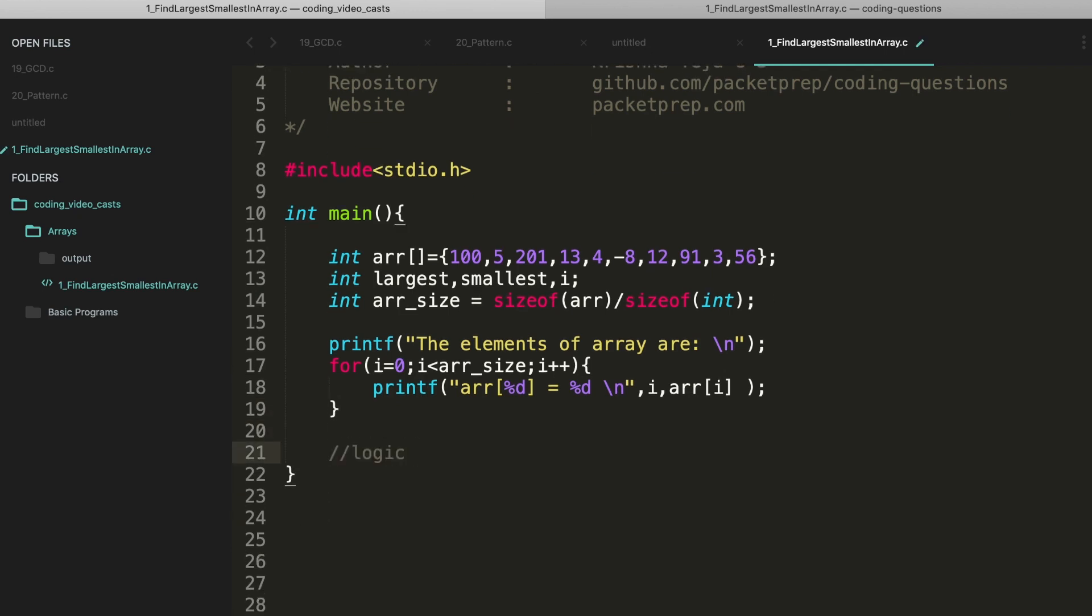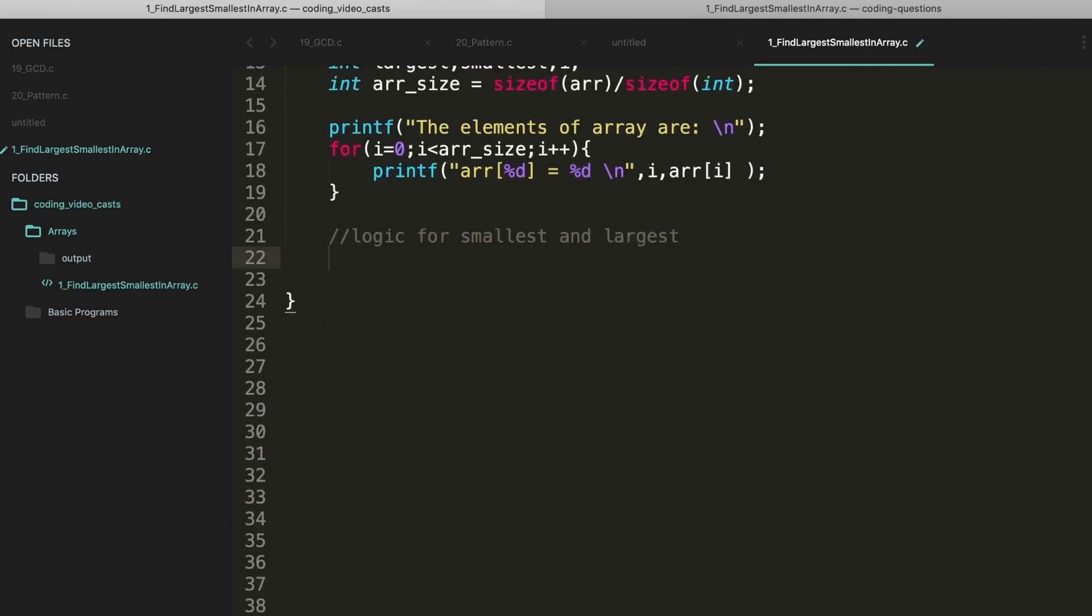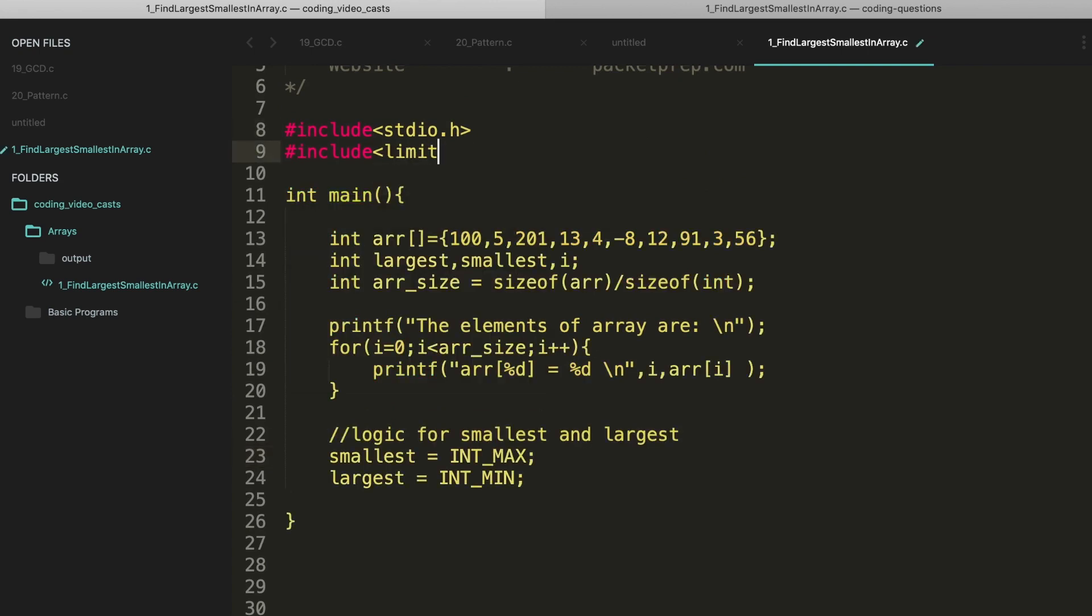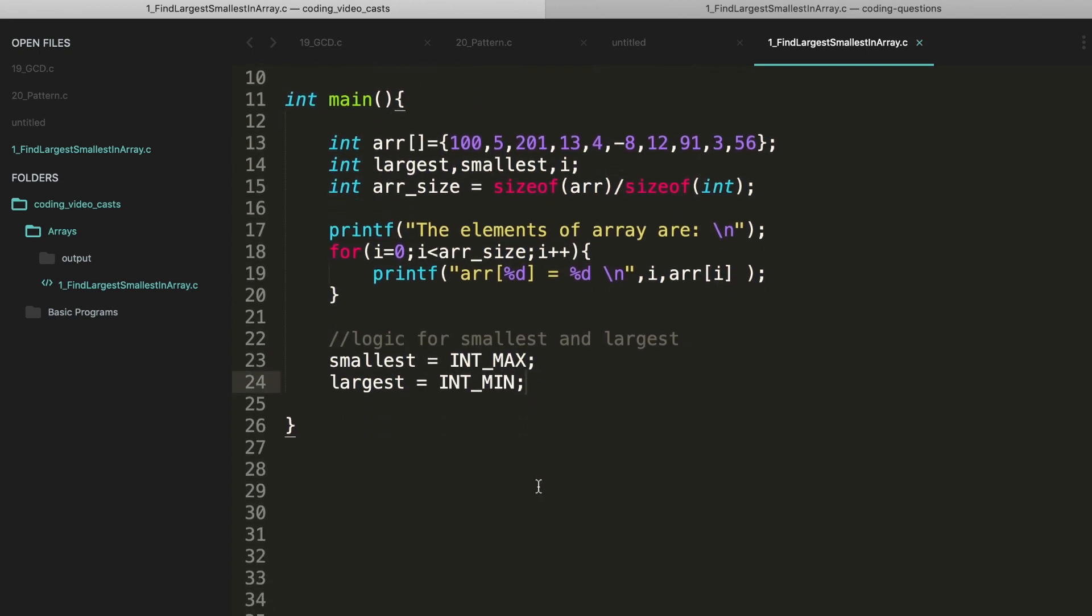Now let's find the smallest and the largest. Logic for smallest and largest: first I'll initialize these values. Smallest will be INT_MAX and largest will be INT_MIN. Now when we use this we also need to include the limits header: include limits.h.